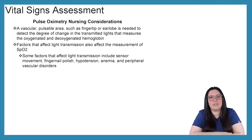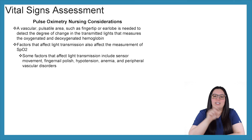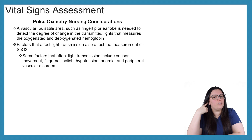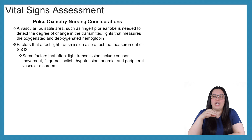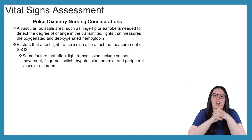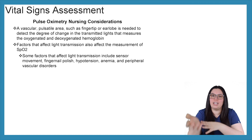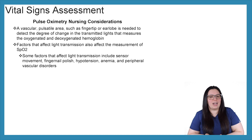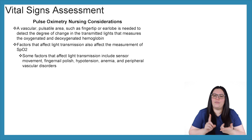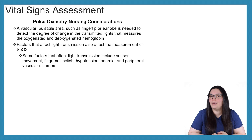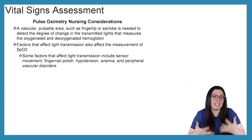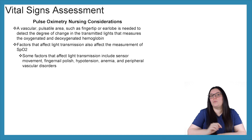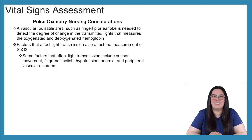Let's talk about some nursing considerations when it comes to pulse oximetry. A vascular pulsatile area such as a fingertip or earlobe is needed to detect the degree of change in the transmitted light that measures the oxygenated and deoxygenated hemoglobin. Factors that affect light transmission also affect the measurement of our SpO2 — those include fingernail polish, sensor movement, hypotensive patients, anemic patients, and patients with peripheral vascular disorders.